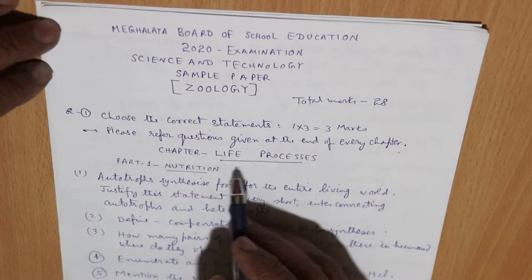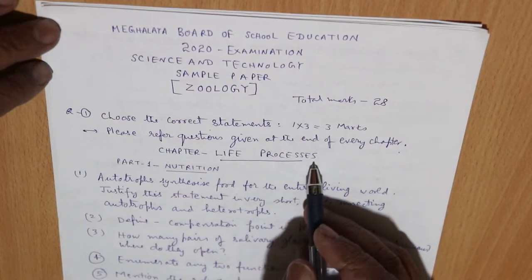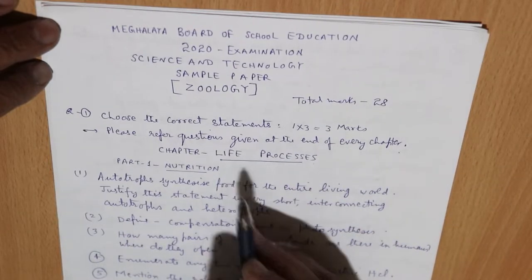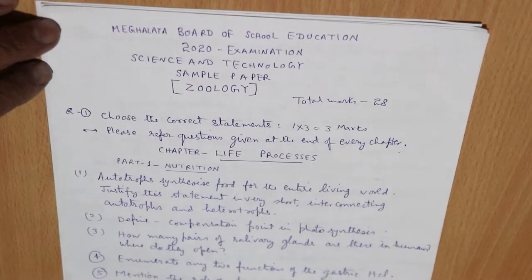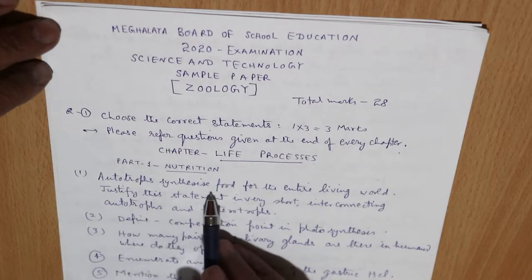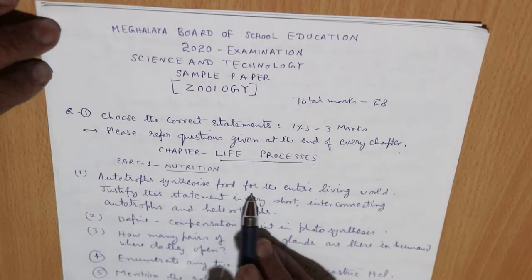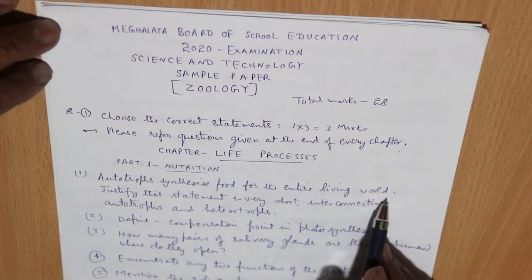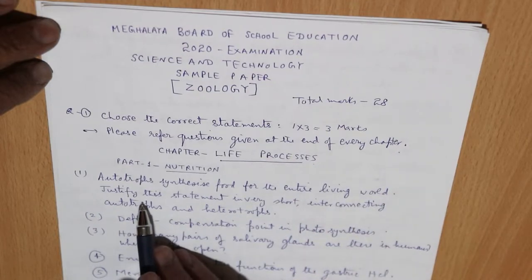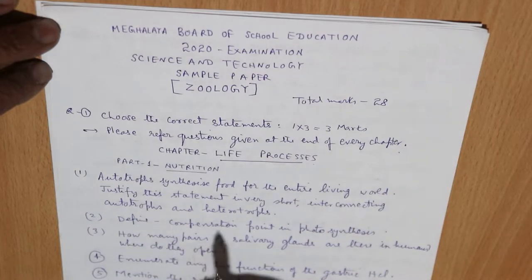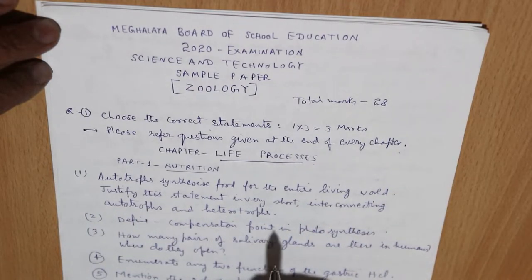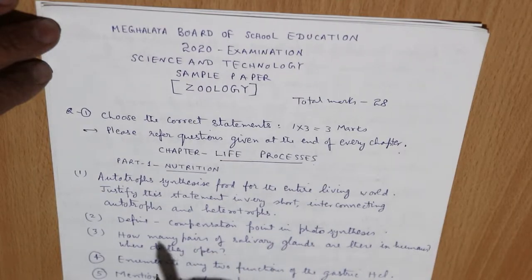We start with the chapter 'Life Processes', part one: nutrition. Question number one — autotrophs generally synthesize food for the entire living world. Justify this statement very briefly, interconnecting autotrophs and heterotrophs.